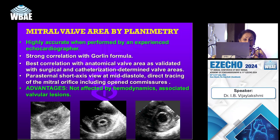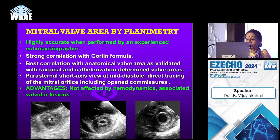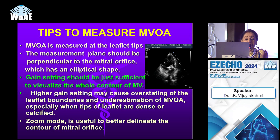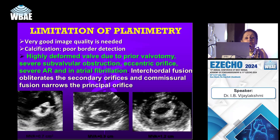Mitral valve area by planimetry is highly accurate when performed by an experienced echocardiographer. Valve areas as small as 0.2 square centimeters (2 mm) have been measured, making balloon dilatation very difficult. Mild, moderate, and severe stenosis are classified accordingly. Gain setting should be just sufficient to visualize the whole contour of the mitral valve, and good image quality is essential — poor image quality leads to underestimation or overestimation.